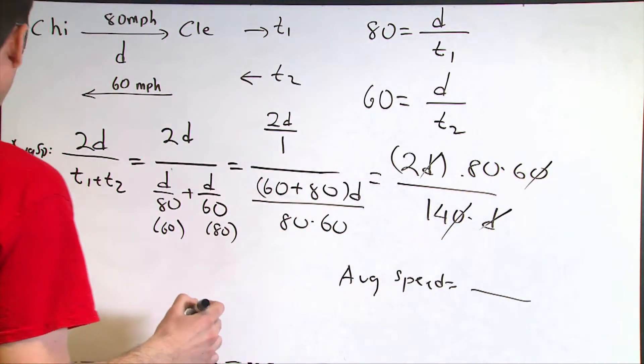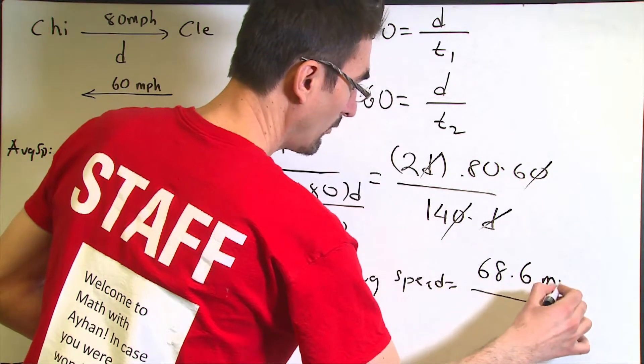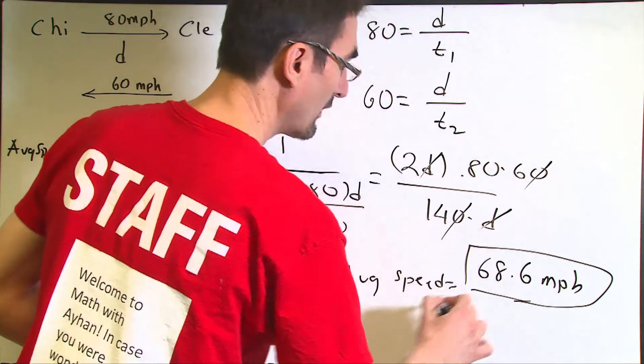After all cancellations, this will equal 2 times 80 times 60 divided by 140. If you do all cancellations here, the answer will equal 68.6 miles per hour. That's the final answer.